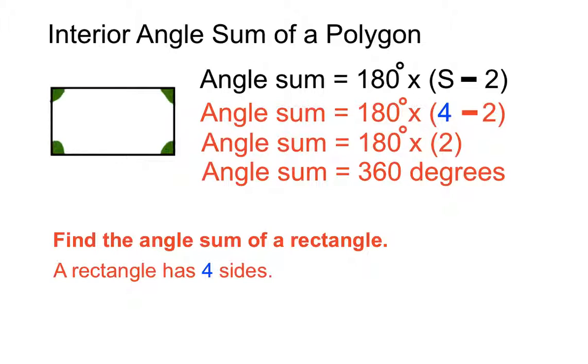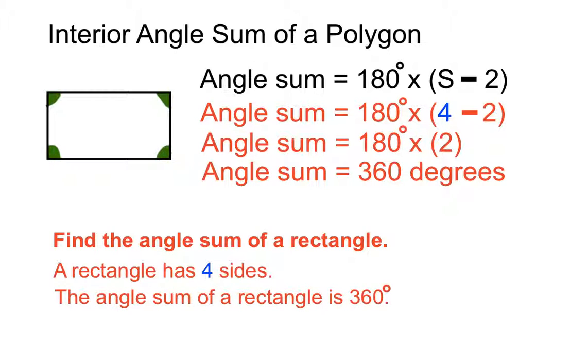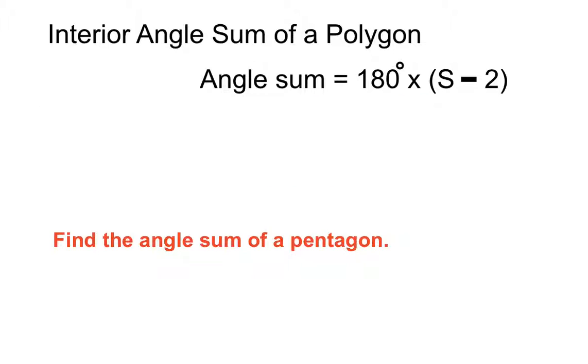But let's have a look at how this formula works for different polygons other than that. So, 360 degrees is the total sum of all those green angles in the rectangle.